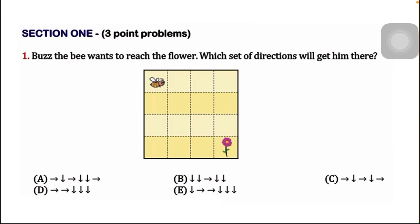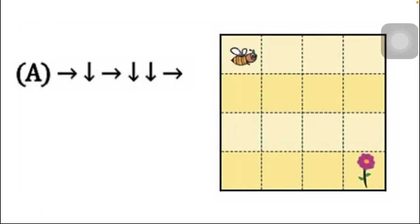Let us check each option one by one. Option A is like this - there are six arrows. Now I have put the arrows: the first one is right, then down, right, down, down, and right.